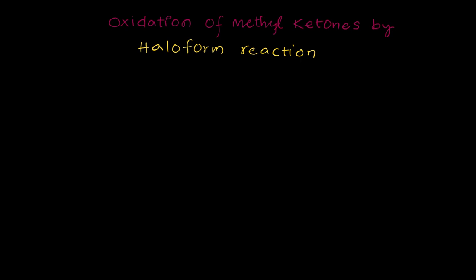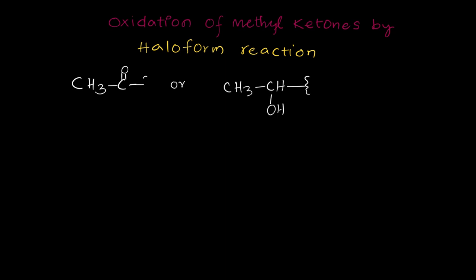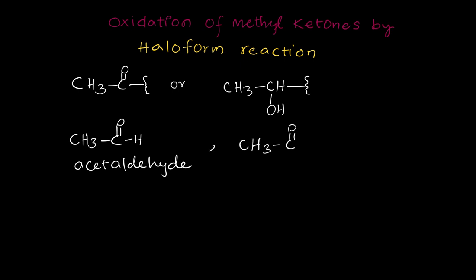Today I want to explain the oxidation of methyl ketones by the haloform reaction. What is required for this haloform reaction is a methyl ketone group. Otherwise, it requires an alcoholic group like CH-OH. One example I am taking here is CH₃CHO, which is acetaldehyde. Another one is a ketone called acetone.